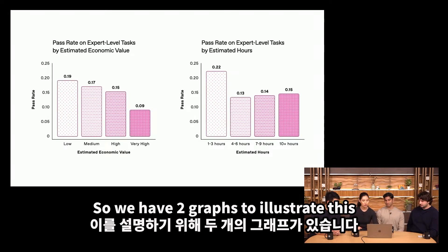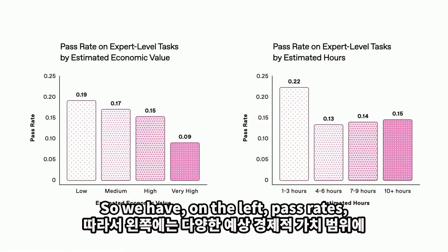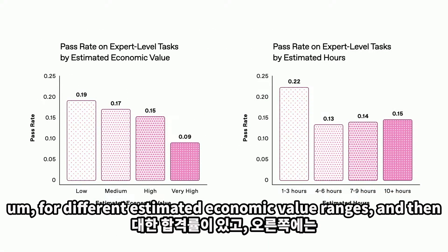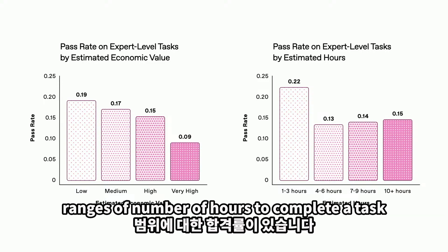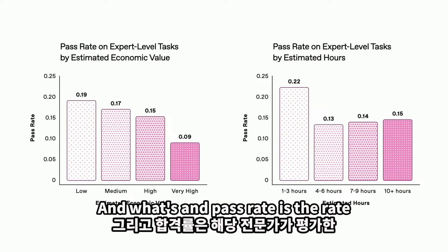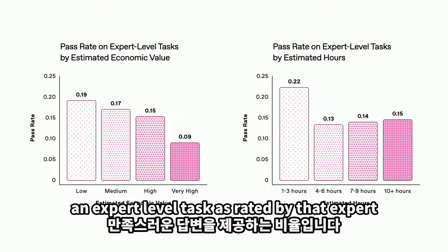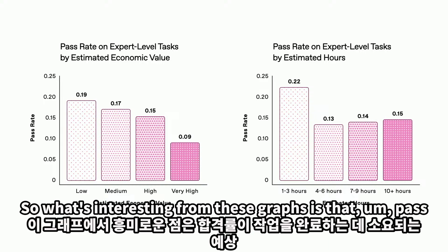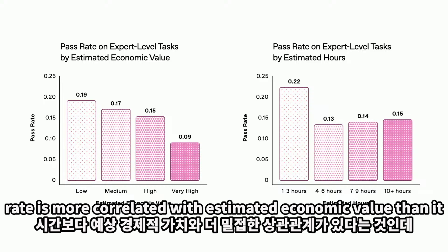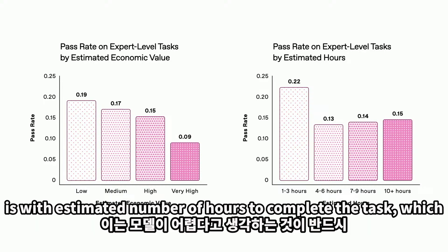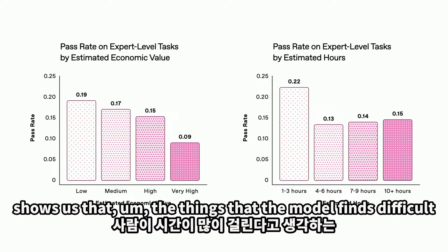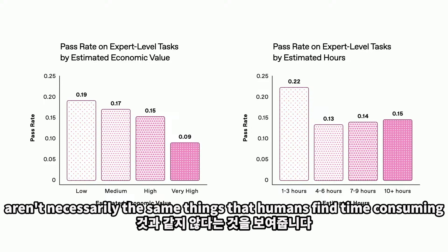We have two graphs to illustrate this. On the left, pass rates for different estimated economic value ranges, and on the right, pass rate for different ranges of number of hours to complete a task. Pass rate is the rate at which the model provides a satisfactory answer to an expert-level task as rated by that expert. What's interesting is that pass rate is more correlated with estimated economic value than with estimated number of hours to complete the task, showing that what the model finds difficult isn't necessarily what humans find time-consuming.